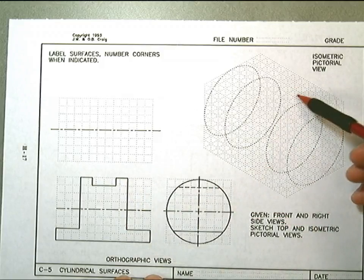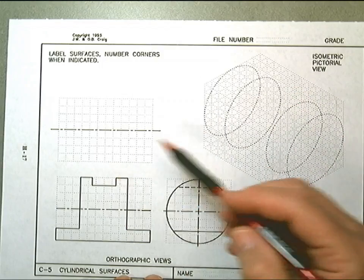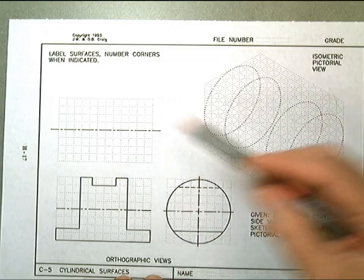Then on your own you'll need to create partial ellipses for this slot that's cut out of the top of the cylinder.